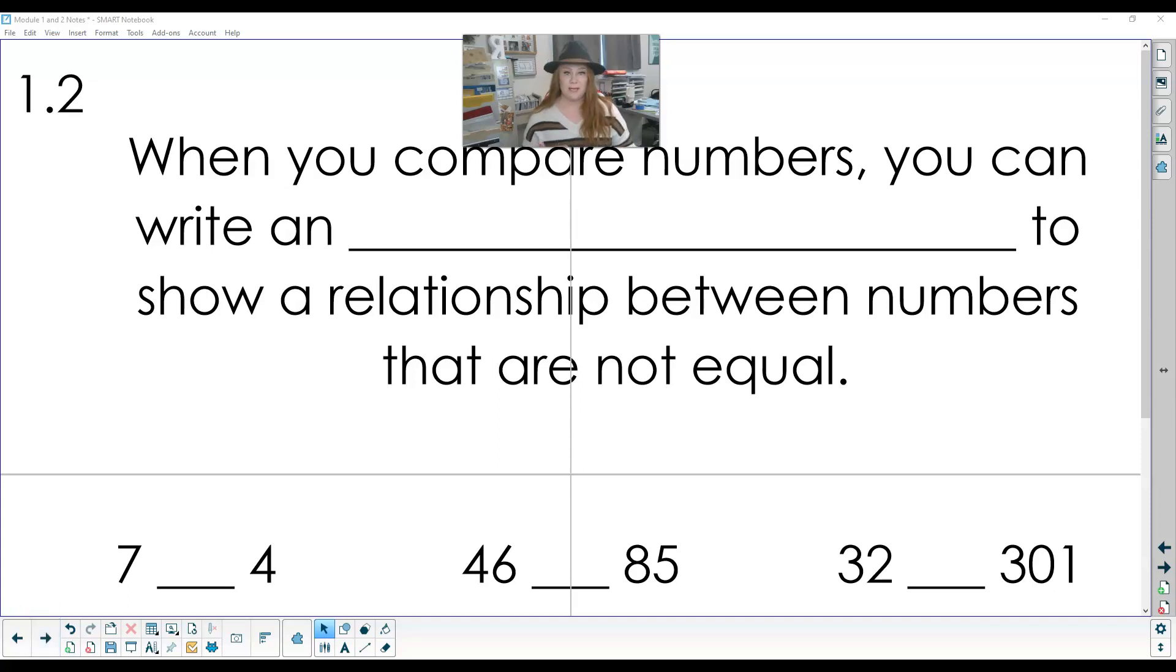For 1.2, we are going to be comparing and ordering those integers. Those integers are whole numbers, also counting numbers, and they're opposites, positives and negatives.